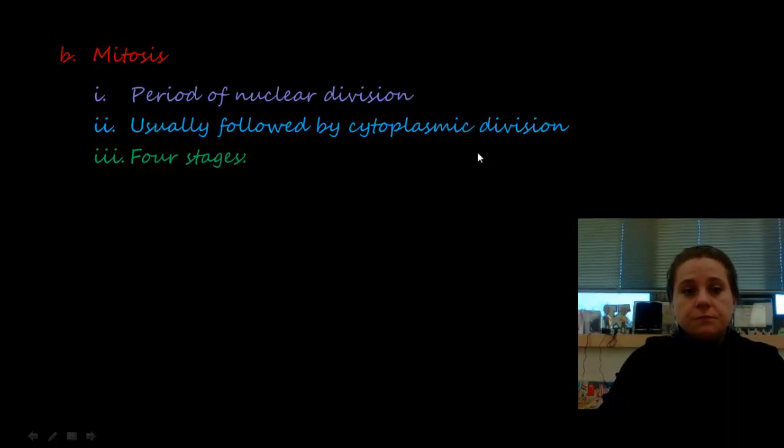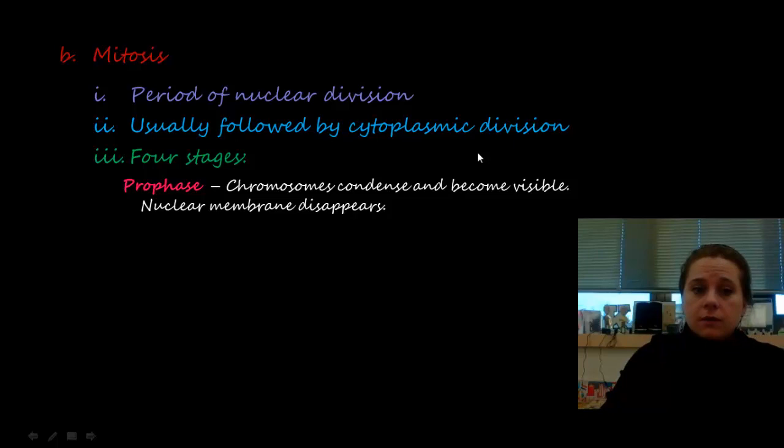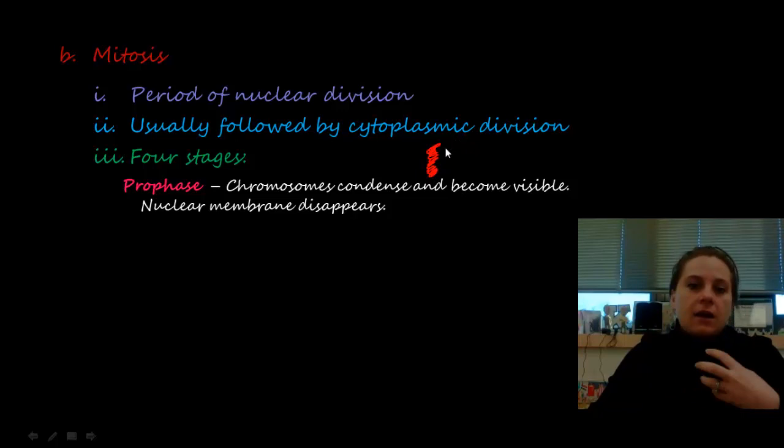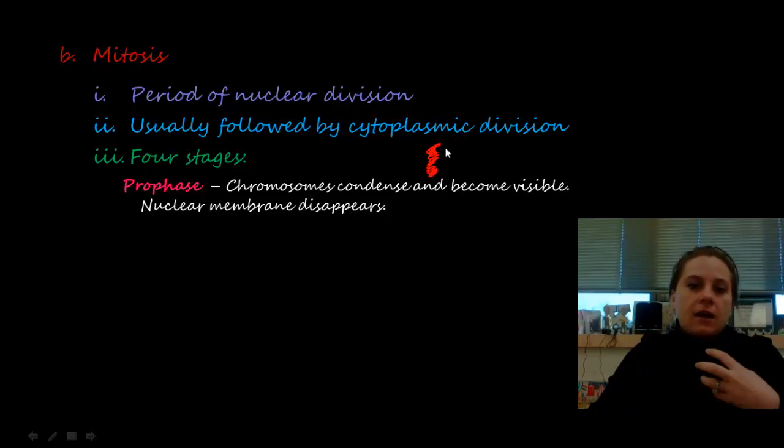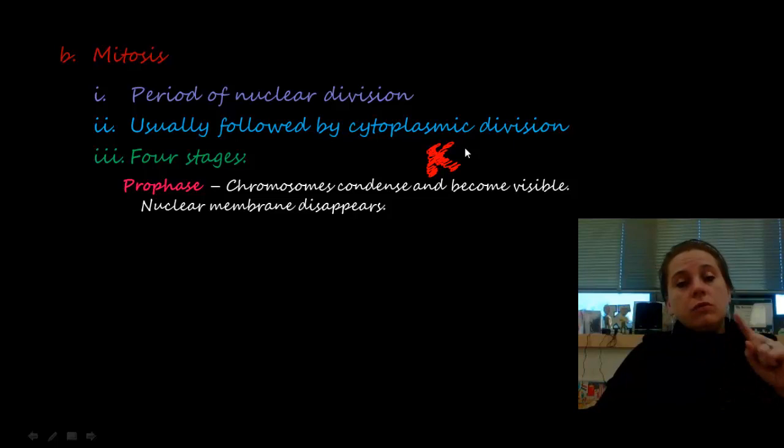The four phases of mitosis: first, prophase. This is where chromosomes condense — they get really tightly packed and coiled up so we can actually see them. Remember, at this point they've already been replicated. All the DNA coils up and we lose the nuclear membrane, which dissolves away so there's no longer a nuclear membrane encasing the genetic material.